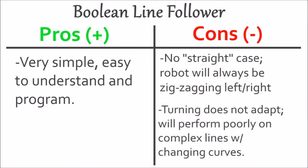As with any line follower, a Boolean line follower has positives and negatives. The main positive is that it's very simple and easy to understand because there's very little going on in the programming. However, there are quite a few downsides. There is no straight case, meaning the robot is always turning in one direction and never driving straight, so you'll always have a constant zigzag motion. Also, the turning does not adapt — it always uses whatever turning setting you've given it, whether a 5% or 15% turn, and won't adapt its turning radius. So if you have a line with complex curves that change in radius, this is going to be a poor choice.